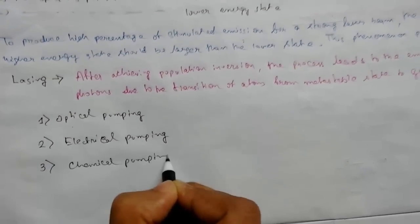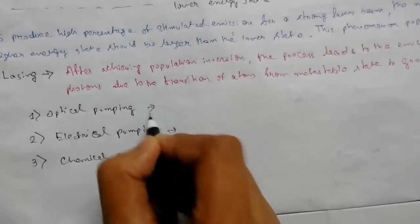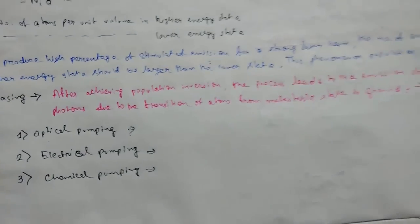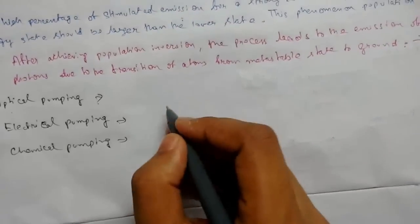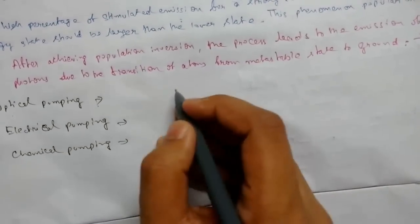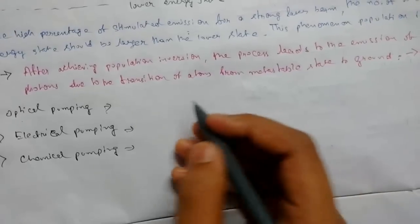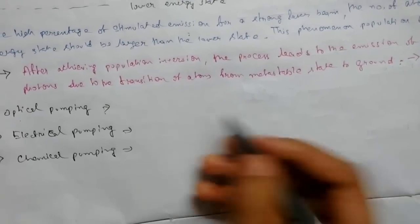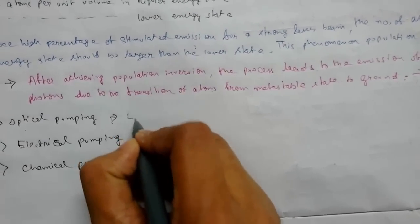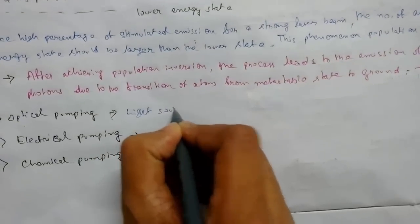In optical pumping, light sources are used for luminous energy to create population inversion by optical photons.